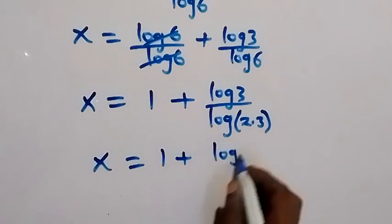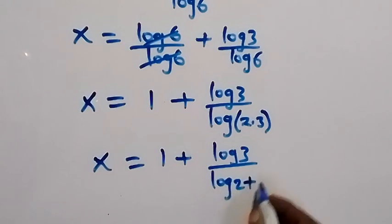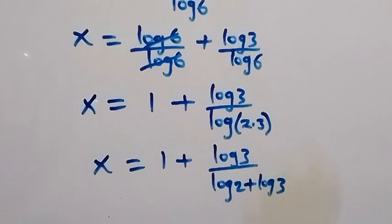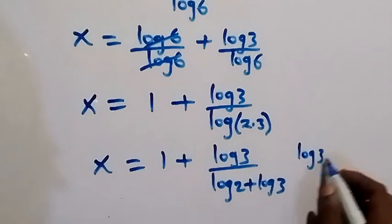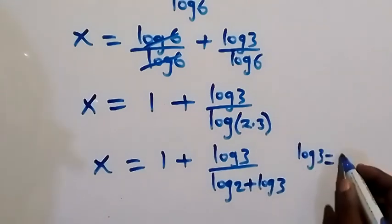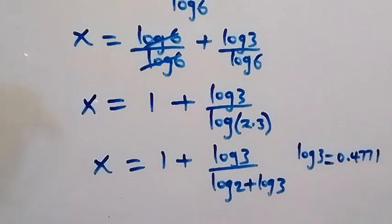And from here, log 3, the value of log 3 is taking us 0.4771, and log 2 as 0.301. Then when we substitute that here, we have x equals to 1 plus 0.4771...